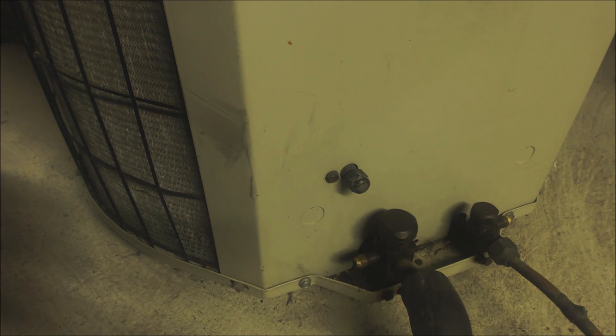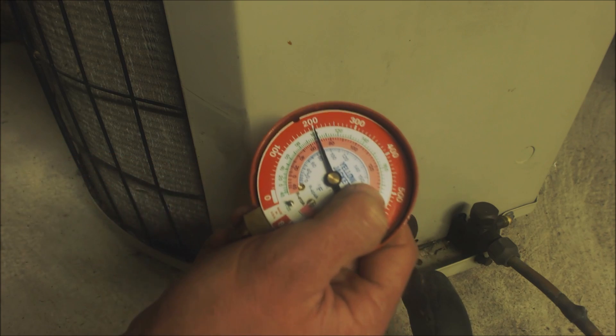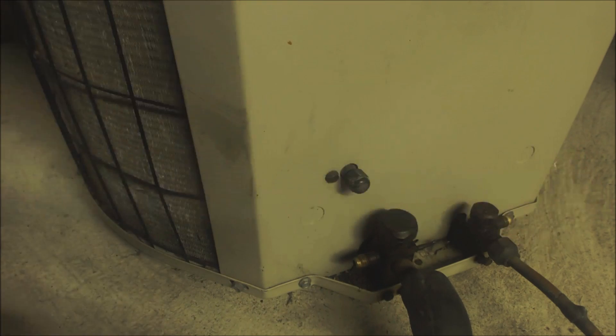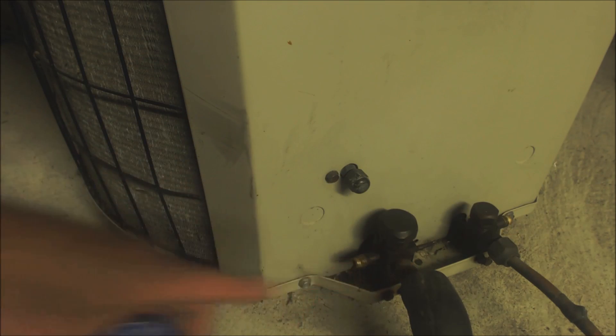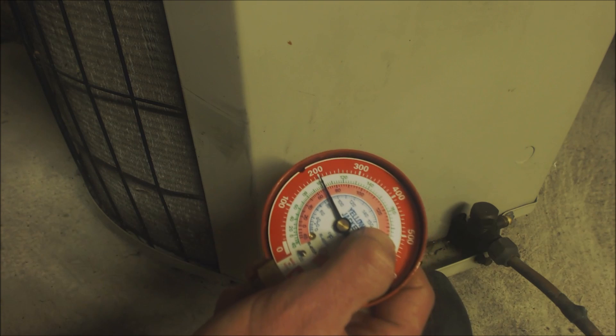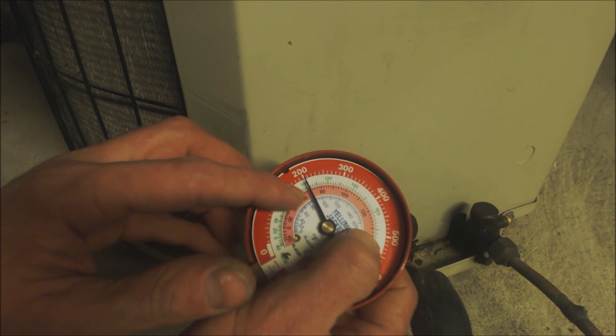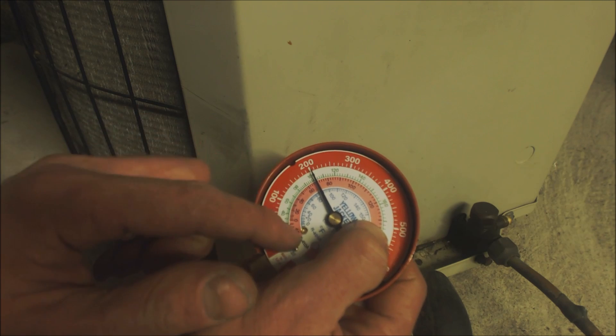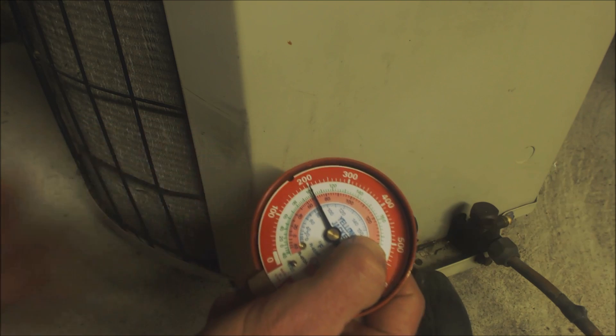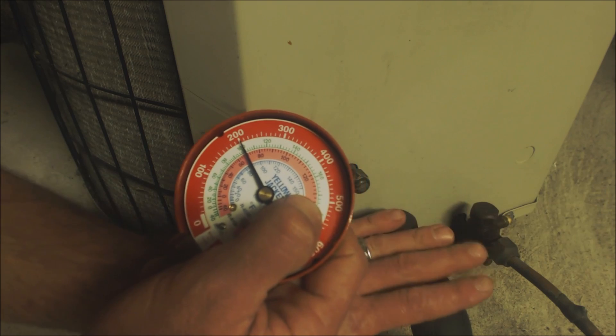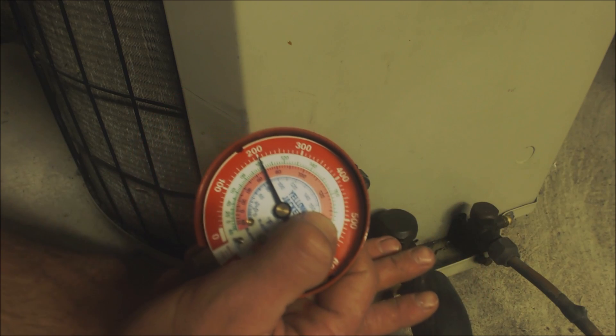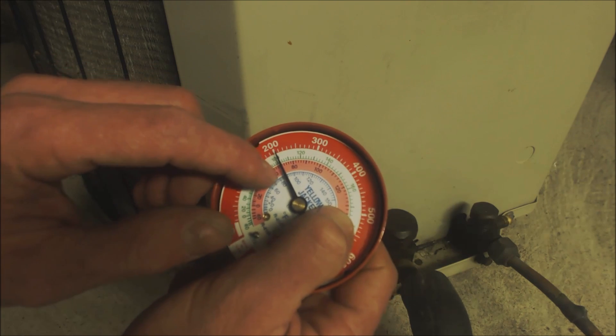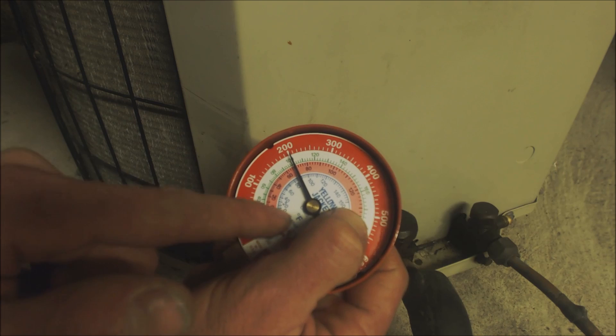Another way is say that it is 70 degrees outside. If you attach your high side gauge to your high side line and your low side gauge to your low side line, and say you read 70 degrees at 200 PSIG, that would mean you have R410A refrigerant.